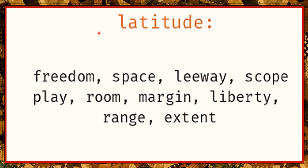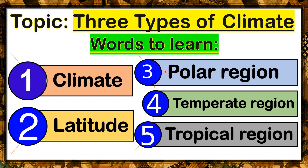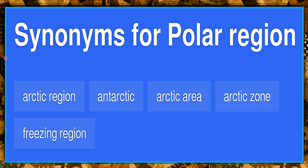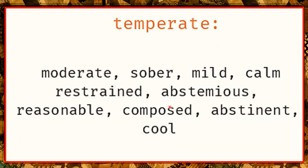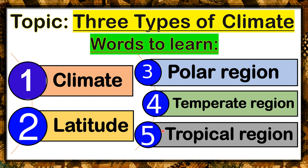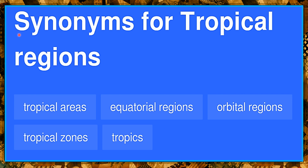Because we are talking about the three climatic zones, latitude here means the scope of the climatic zone. Next, polar region — synonyms include Arctic region, Antarctic, Arctic area, Arctic zone, and freezing region. Temperate region means moderate, sober, mild, calm, restrained, abstemious, reasonable, composed, abstinent, and cool. And lastly, tropical region synonyms are tropical areas, equatorial regions, orbital regions, tropical zones, and tropics.